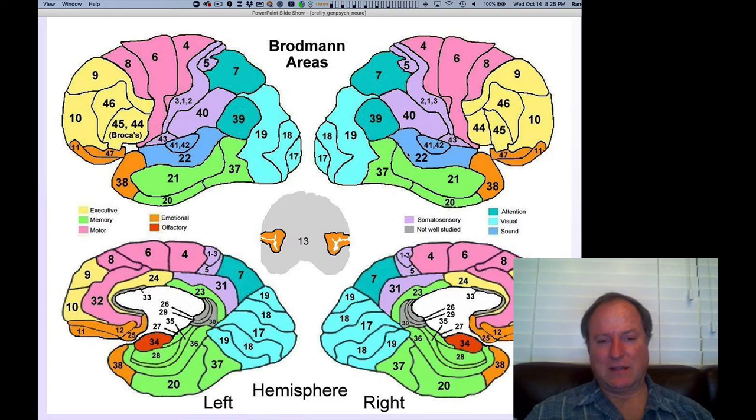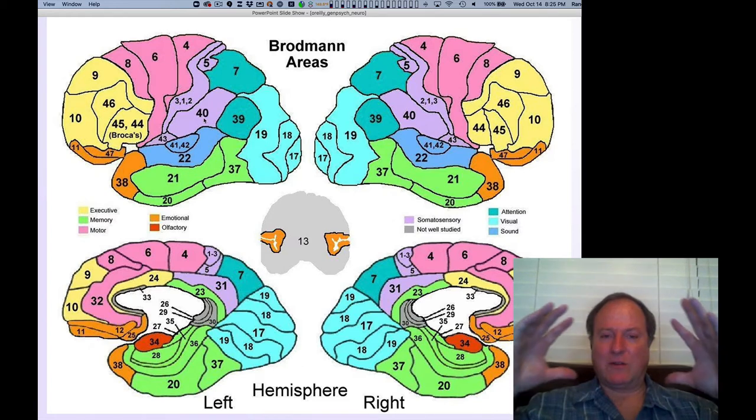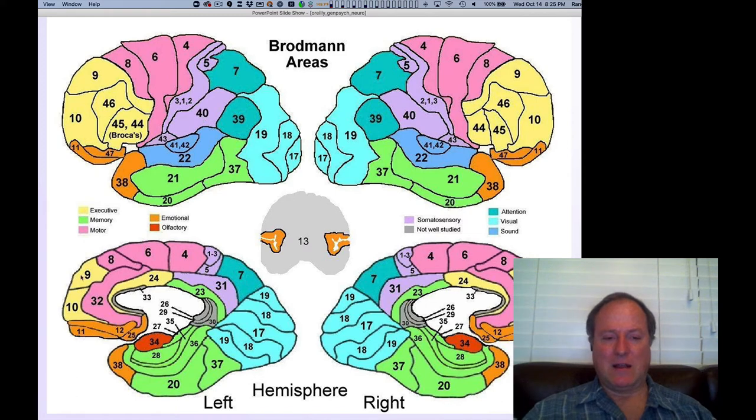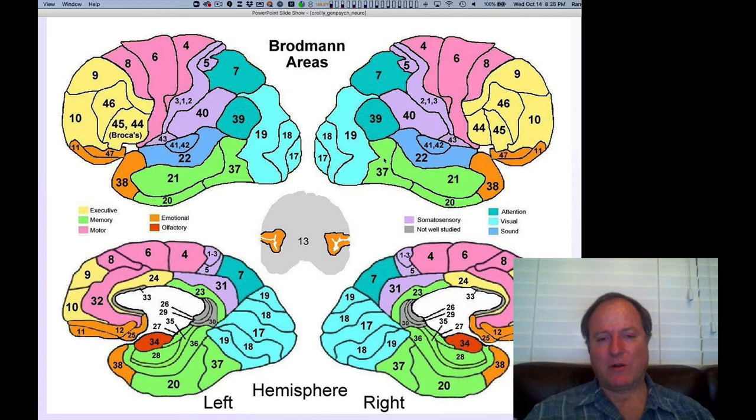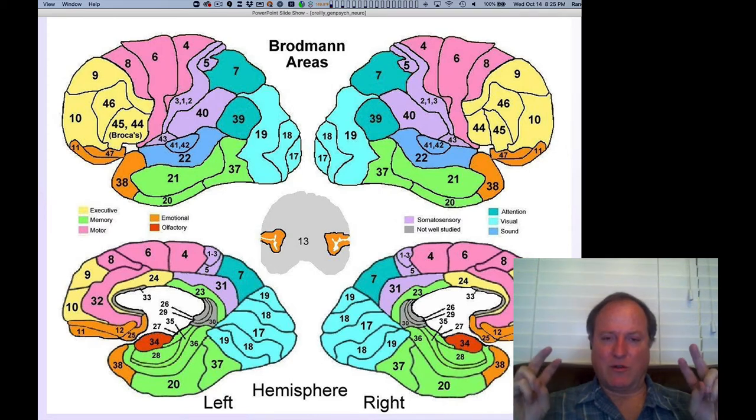This is the outer surface, the lateral surface of the cortex. And this other view here is on the medial interior surface of the cortex. As a generalization, the lateral surface tends to be more about sensory motor processing, and the medial surface tends to be more about affective, motivational, limbic areas of processing.